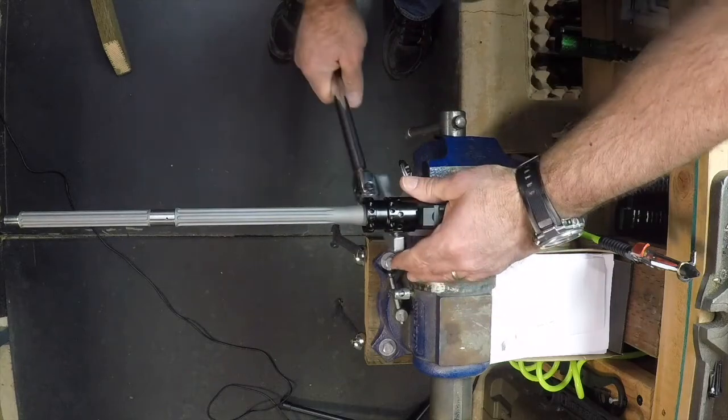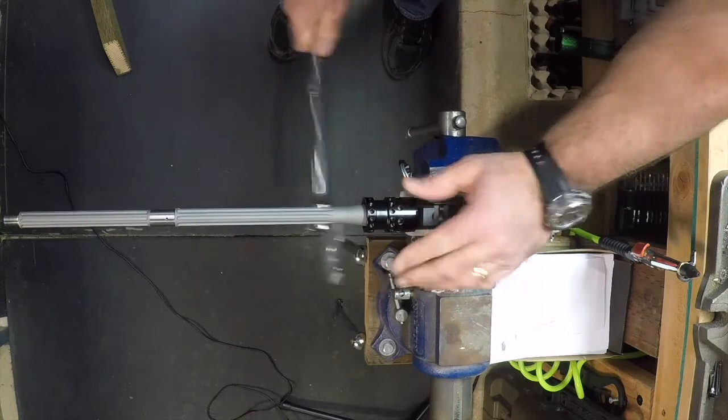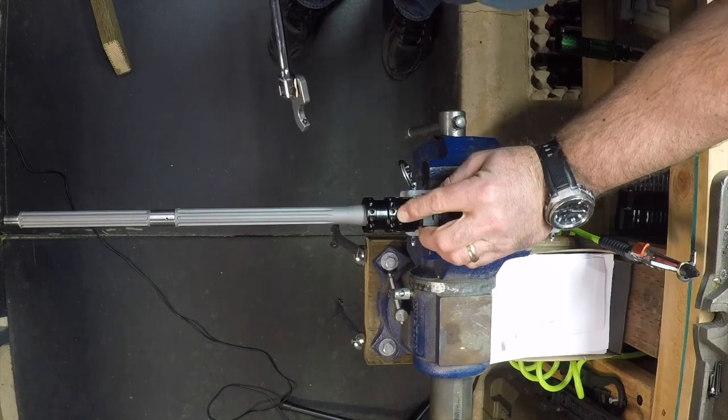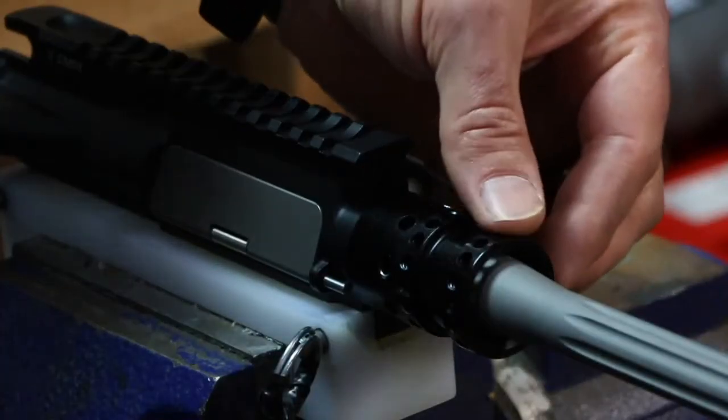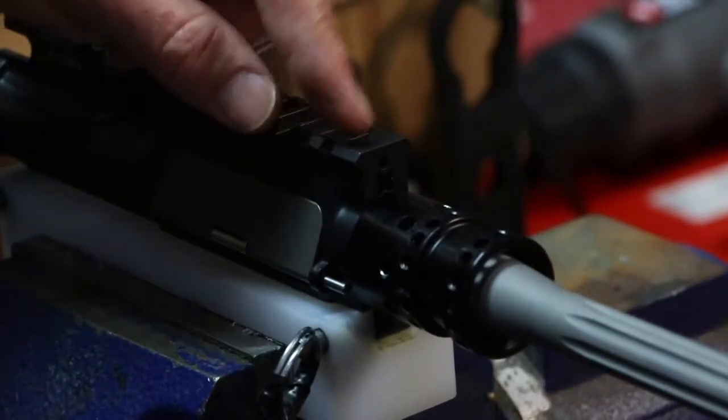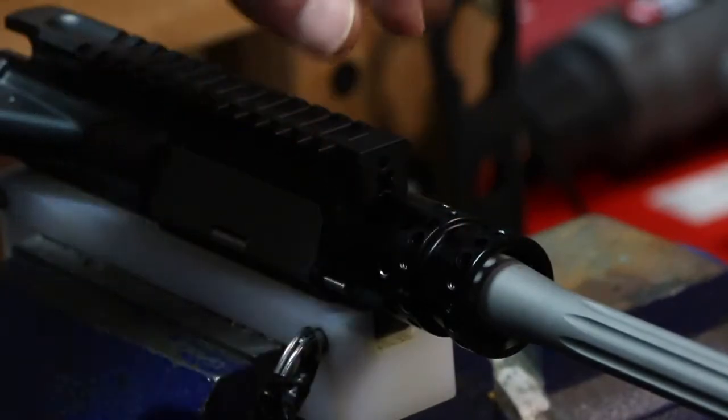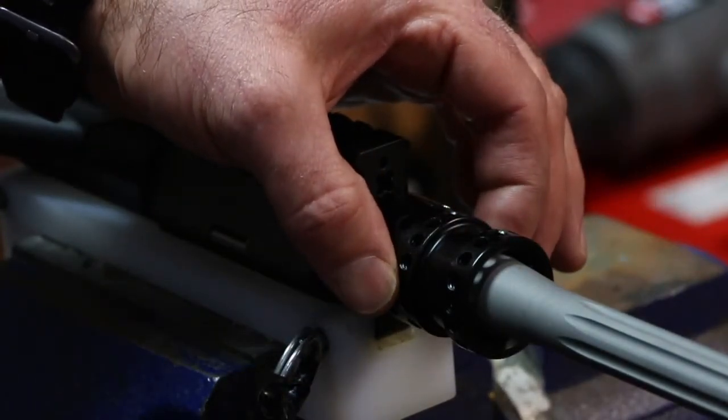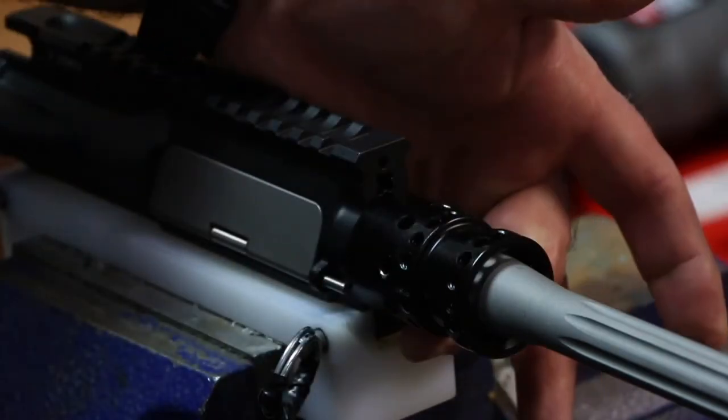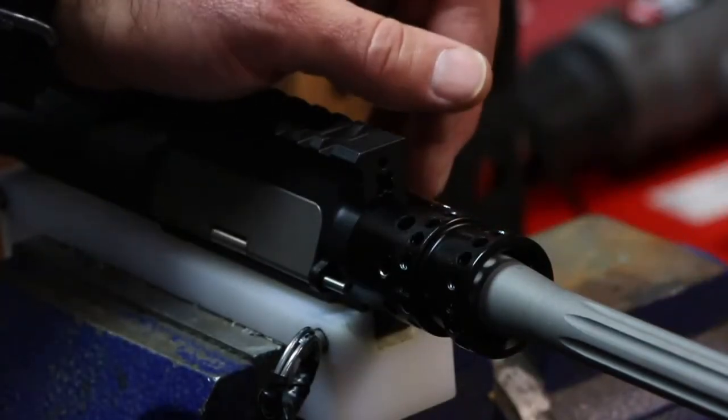So after you've kind of seasoned the threads, you want to look and see where these screw holes are lining up. Essentially you want one set to be top dead center. That will put two sets on each side and then one directly on the bottom for your hand guard.